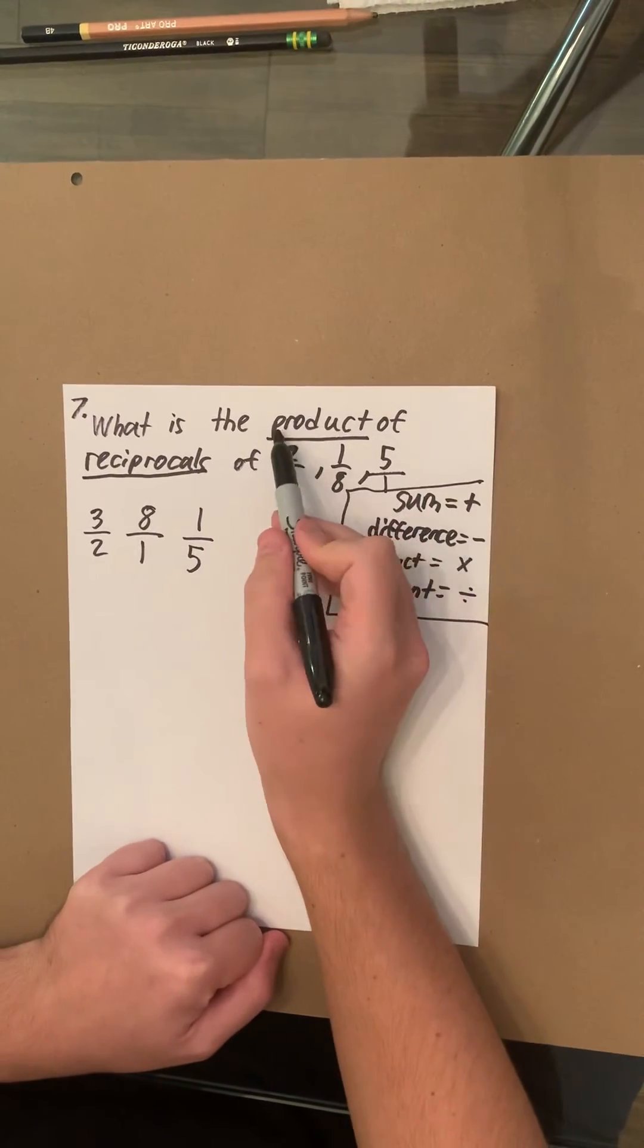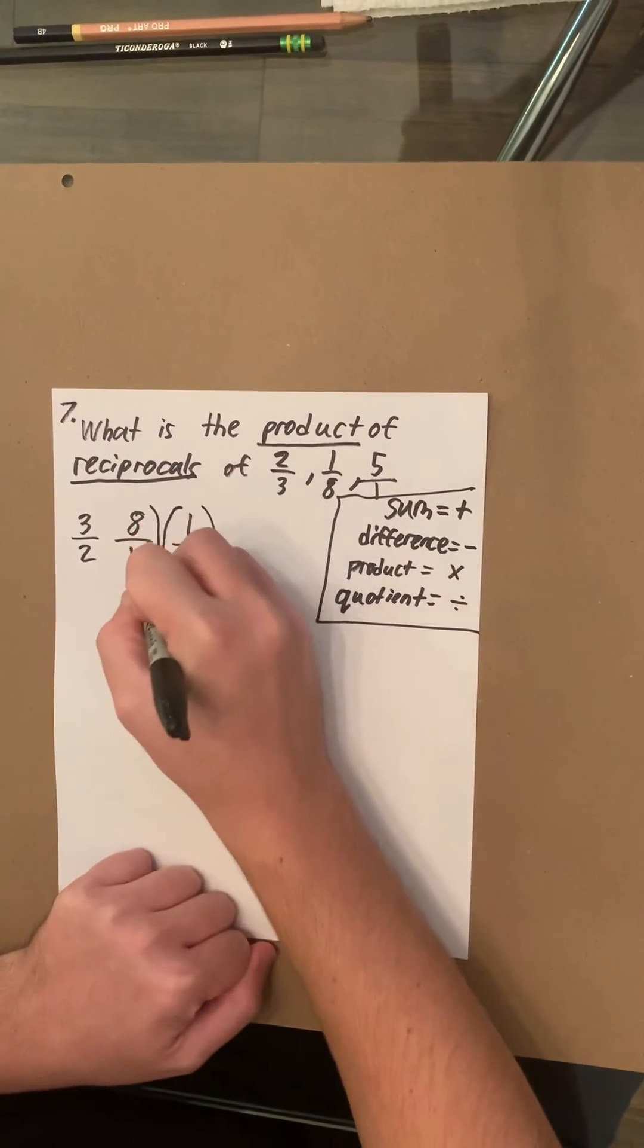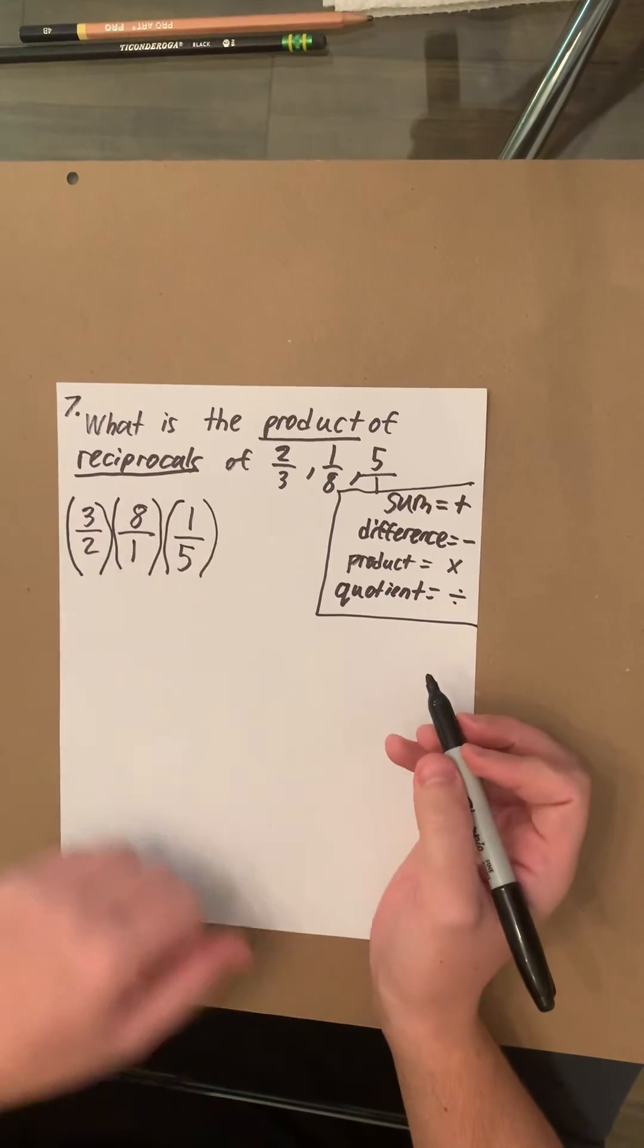But going back to they asked for the product, which equals multiplication. So we're going to multiply each of these together. Anything outside of a parenthesis is multiplied.